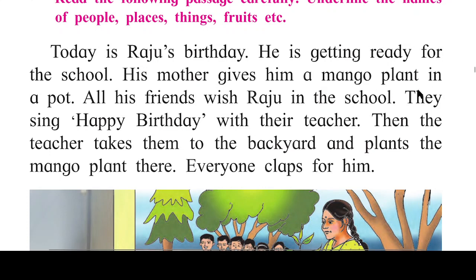Mango plant in a pot — plant bhi ek cheez hai, it is a thing, so underline plant. Pot bhi ek thing hai, ek cheez hai, so underline pot. 'All his friends wish Raju in the school' — here Raju appears again, so underline Raju again because Raju is a name of a person. Friends bhi naming word hoga, kyunki friends bhi persons mein aate hain.